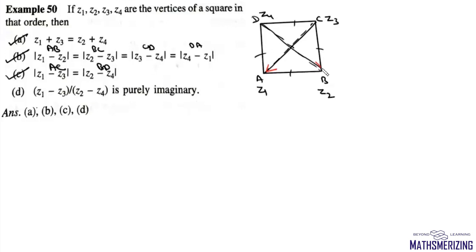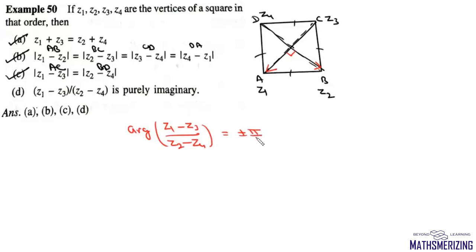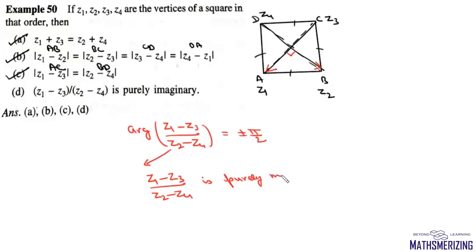For option D: the angle between diagonals z1 minus z3 and z2 minus z4 is 90 degrees, so the argument of z1 minus z3 upon z2 minus z4 is either plus pi by 2 or minus pi by 2. If the argument is plus or minus pi by 2, the complex number is purely imaginary. So option D is also correct. All options A, B, C, and D are correct.